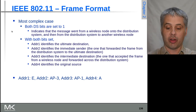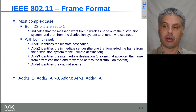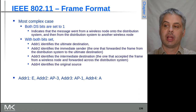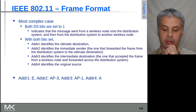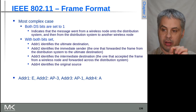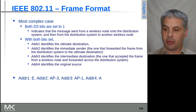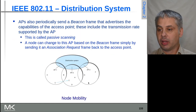Address two identifies the source node. By comparison, if both bits are set, this is the most complicated situation — it means a message went from a wireless node through the distribution system and then back out to another wireless node. Address one still identifies the ultimate destination, address two is who most recently forwarded the frame.